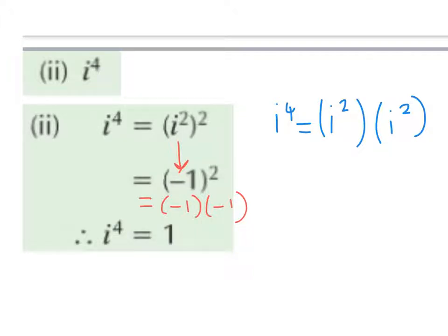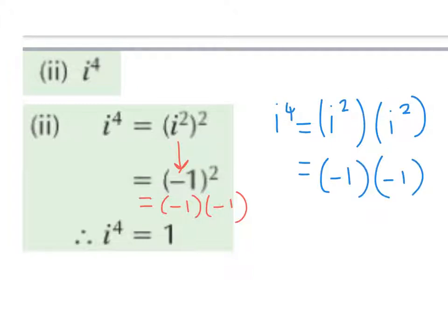Another way of doing this is saying i to the power of 4 equals i squared times i squared, because multiplying powers with the same base we add the powers, and 2 plus 2 is 4. We know i squared is minus 1, so this i squared is also minus 1, and minus 1 times minus 1 is plus 1 — the same answer.